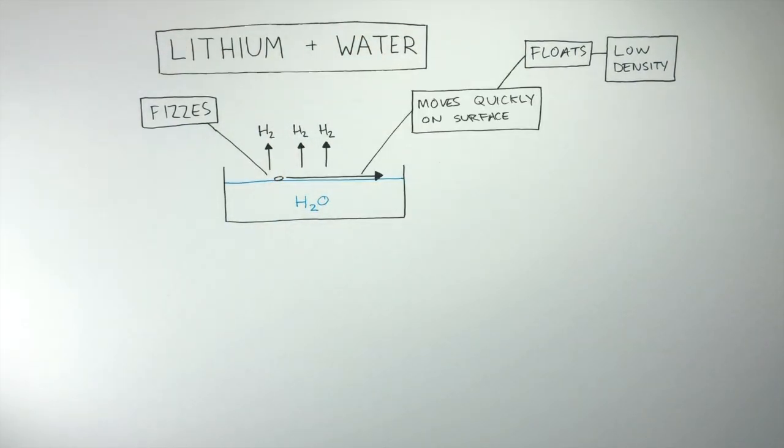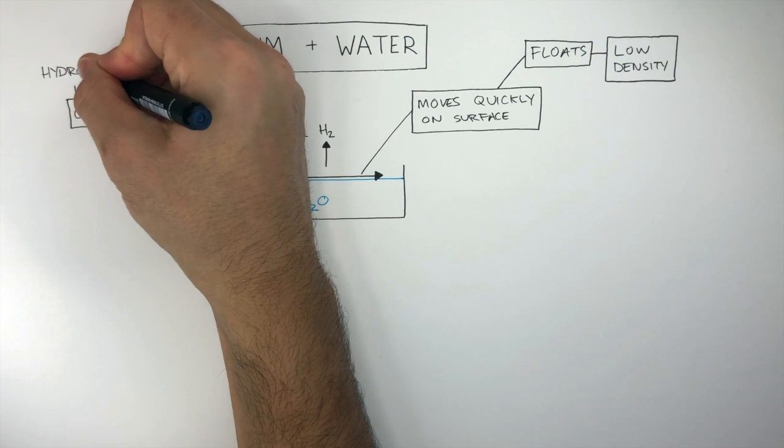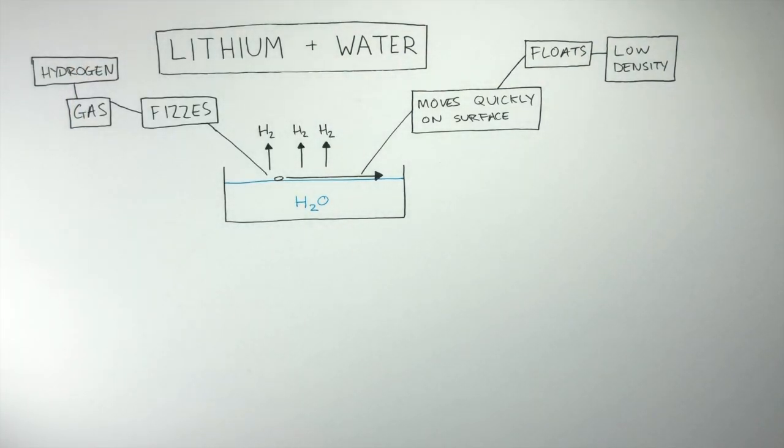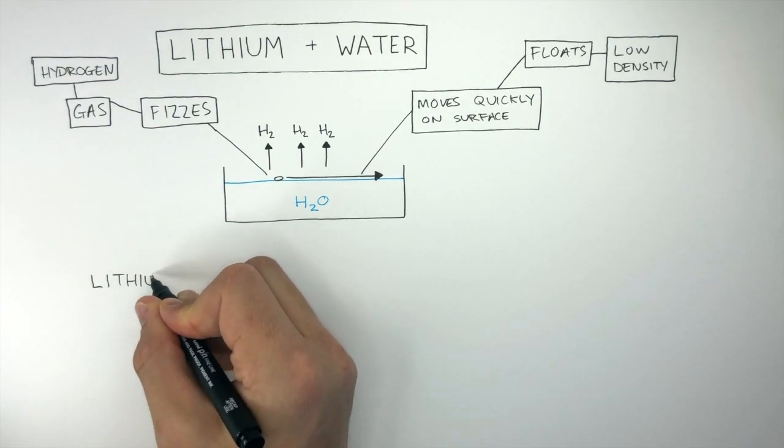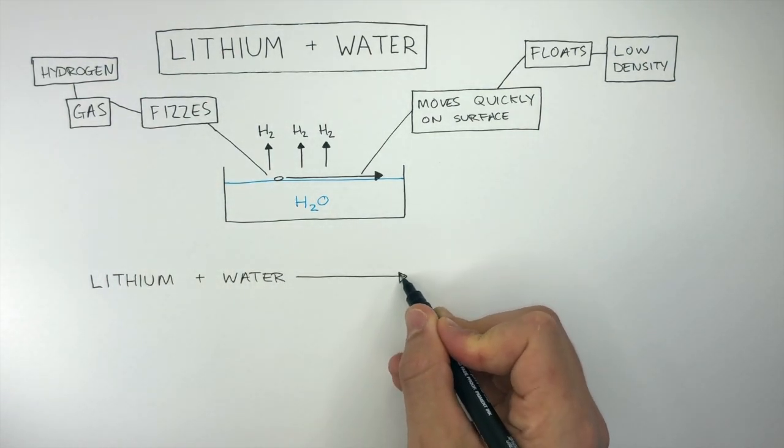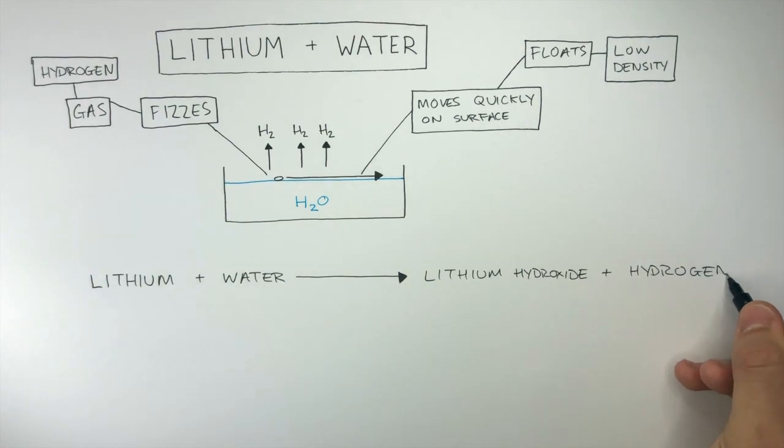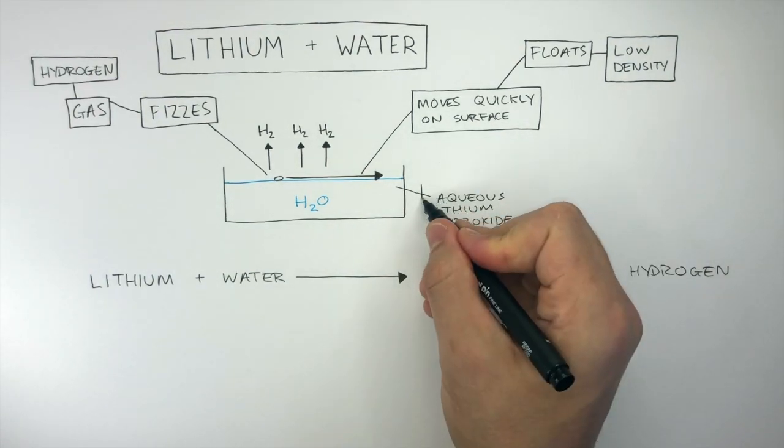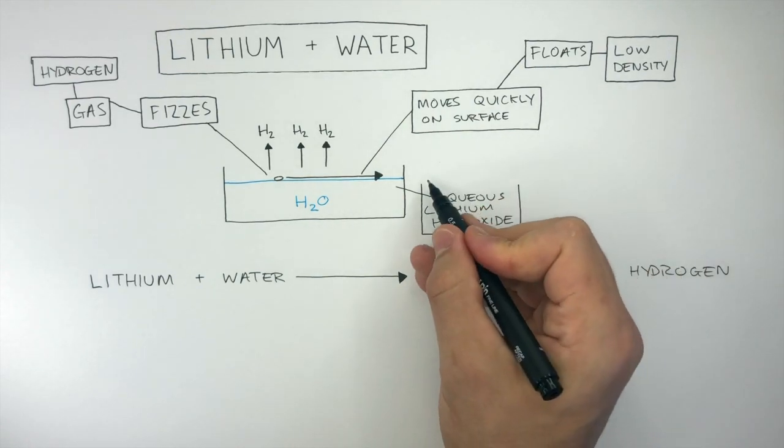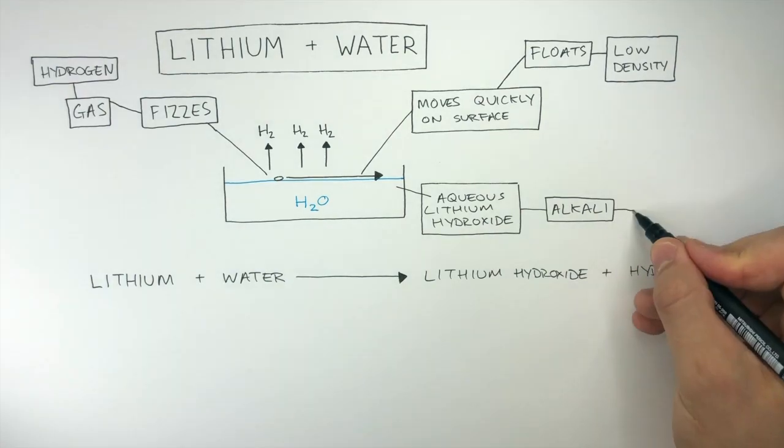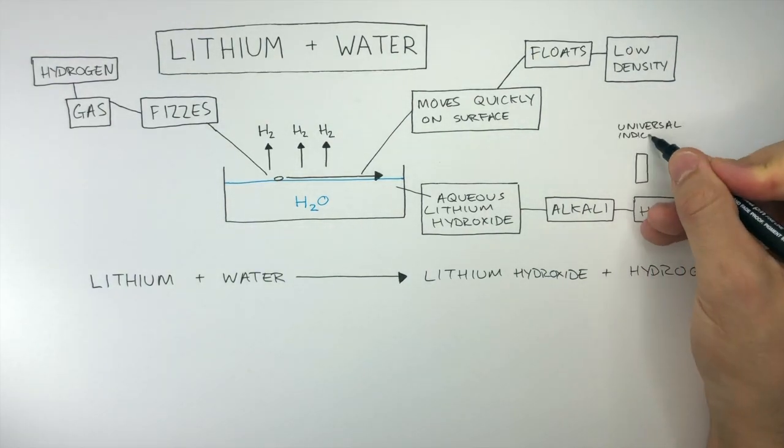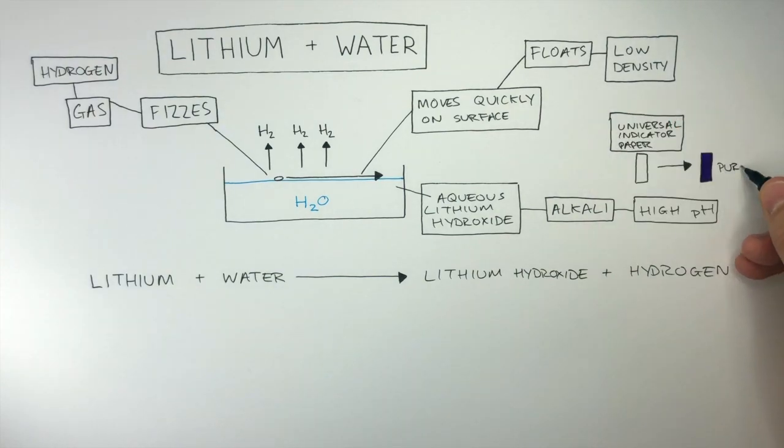The lithium fizzes as it reacts with the water. This is due to hydrogen gas being given off. If you ever see fizzing in any chemical reaction, this means a gas is being given off. And in this case, it is hydrogen. Hydrogen gas is a product whenever a group 1 metal reacts with water.